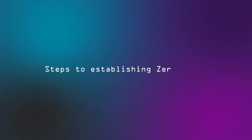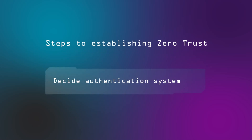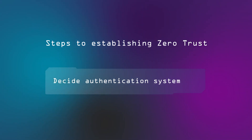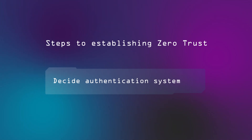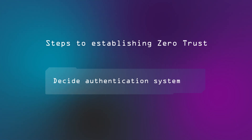Moving to Zero Trust decentralizes this responsibility and lets those people with subject matter expertise — each individual team or each application owner — decide who needs access. So starting from this typical company where everything is centralized in Active Directory, you go through three steps in establishing Zero Trust. First, you decide on your authentication system. This is either your existing Active Directory or one of the newer identity providers. If you're starting from scratch you'll probably use a more focused tool; if you're already in Active Directory you might stay there just because the migration is a lot of work.